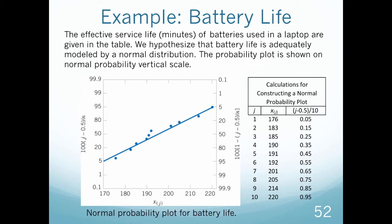So let's look at this example. This is in your book. The effective service life in minutes of batteries used in a laptop are given in the following table. We hypothesize that the battery life is adequately modeled by a normal distribution. The probability plot is shown on the normal probability vertical scale.